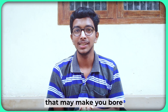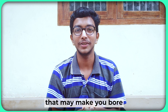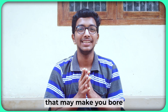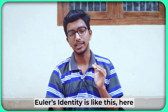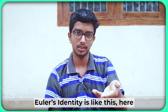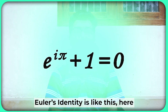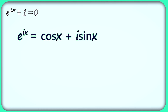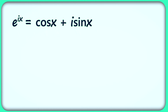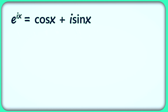I am not going to do a derivation and make you bored, because sometimes it is boring, right? I am just going to tell what it is. Euler's identity — it is like this, here. This is an equation found out by Euler himself: e raised to ix is equal to cos x plus i sin x. We are not dealing with how we get to this equation, because it is a little complicated.